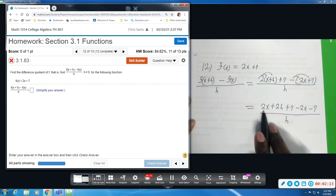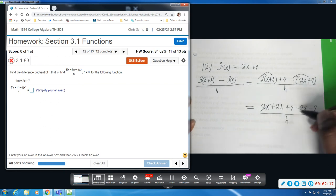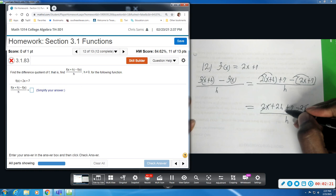Now, if you notice on the top, and this will always happen, things will cancel out. There is a positive 2x and a negative 2x. They will cancel out. There is a positive 7 and a negative 7. They will cancel out.